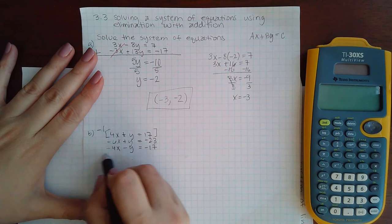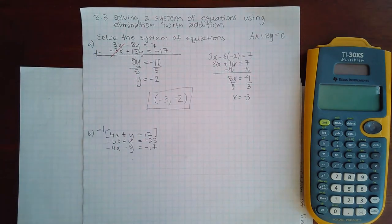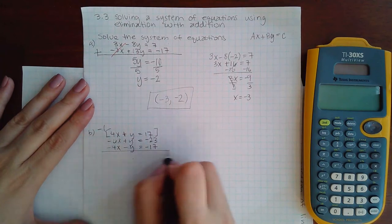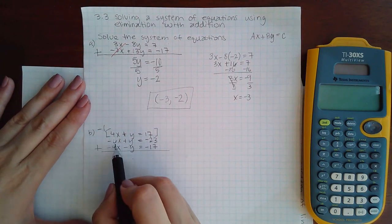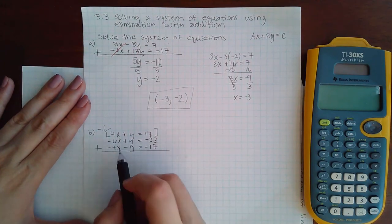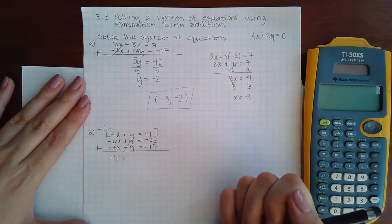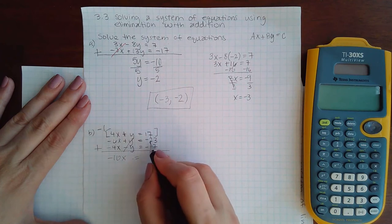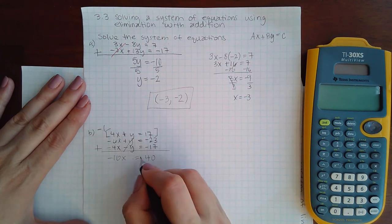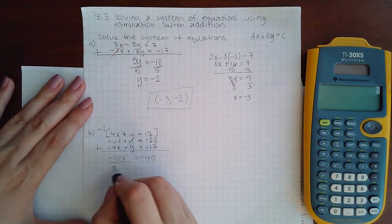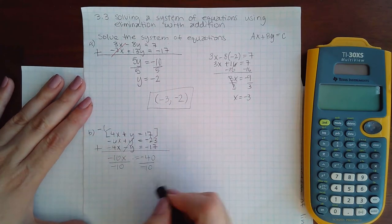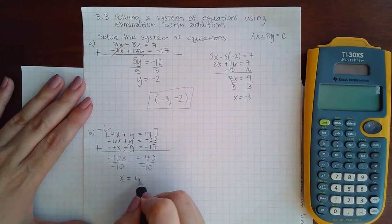Now that these are together, I'm going to put my plus sign. -6x plus -4x is -10x. The positive y and negative y cancel. -23 plus -17 gives -40. Dividing both sides by -10 gives x = 4.